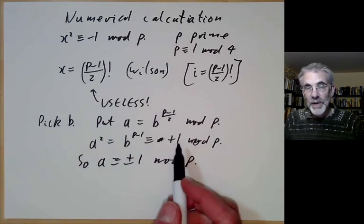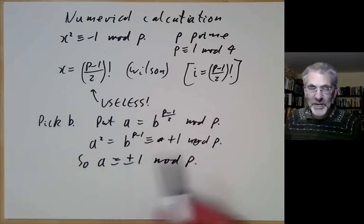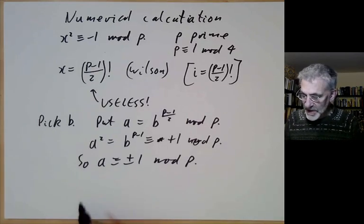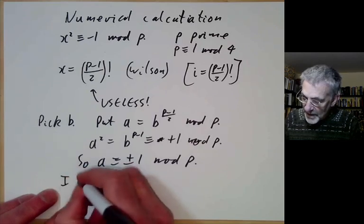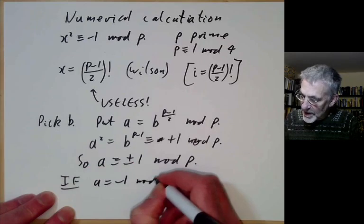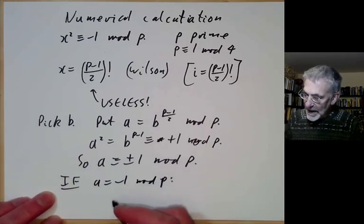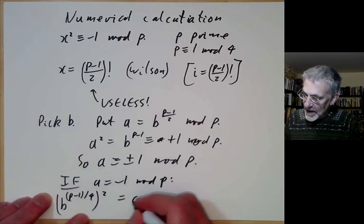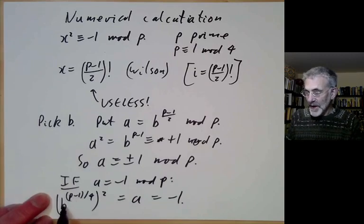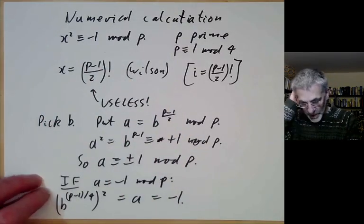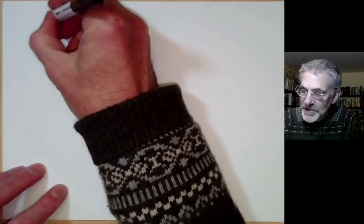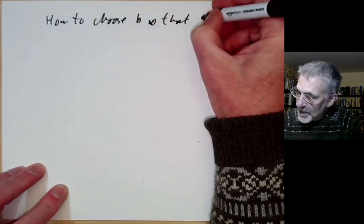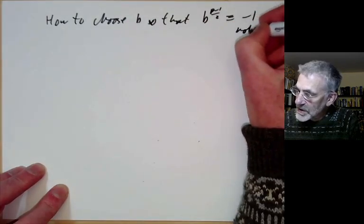That's because the number 1 only has two square roots modulo p, since there are no zero divisors when p is prime. So if a equals minus 1 mod p, then we're done — because b to the (p minus 1) over 4, squared, equals a, which equals minus 1. So b to the (p minus 1) over 4 is our solution. All we need to do is choose b so that b to the (p minus 1) over 2 is congruent to minus 1, not plus 1.